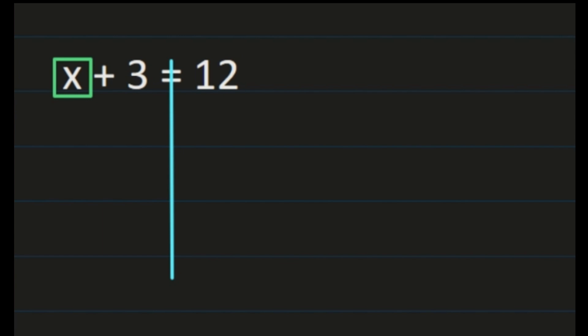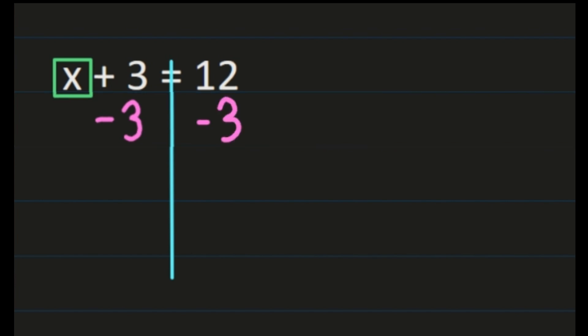Now to get x by itself, we have to do the inverse operation. We were adding 3, so the opposite of addition is subtraction — our inverse operation is subtraction, and we need to subtract 3 because we want to get x all by itself. Whatever I do to the left-hand side, I have to do to the right-hand side, which means I needed to also subtract 3 from the right-hand side of my equation.